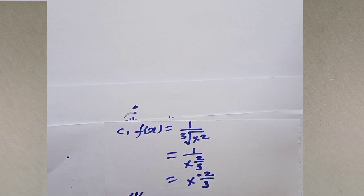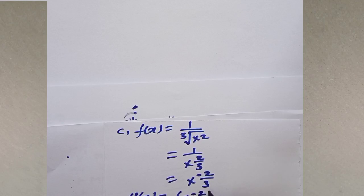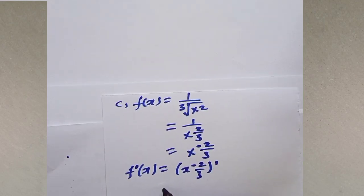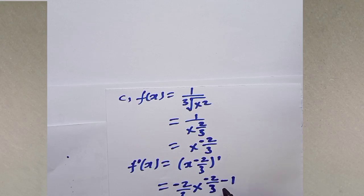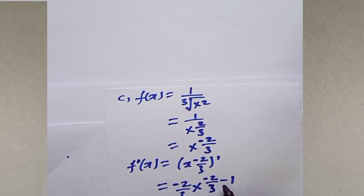Now you can apply the power rule formula. Differentiate f of x equals x to the power of negative 2 over 3. In this formula n is equal to the negative real number negative 2 over 3. So the derivative is negative 2 over 3 times x to the power of negative 2 over 3 minus 1, and negative 2 over 3 minus 1 is equal to negative 5 over 3.